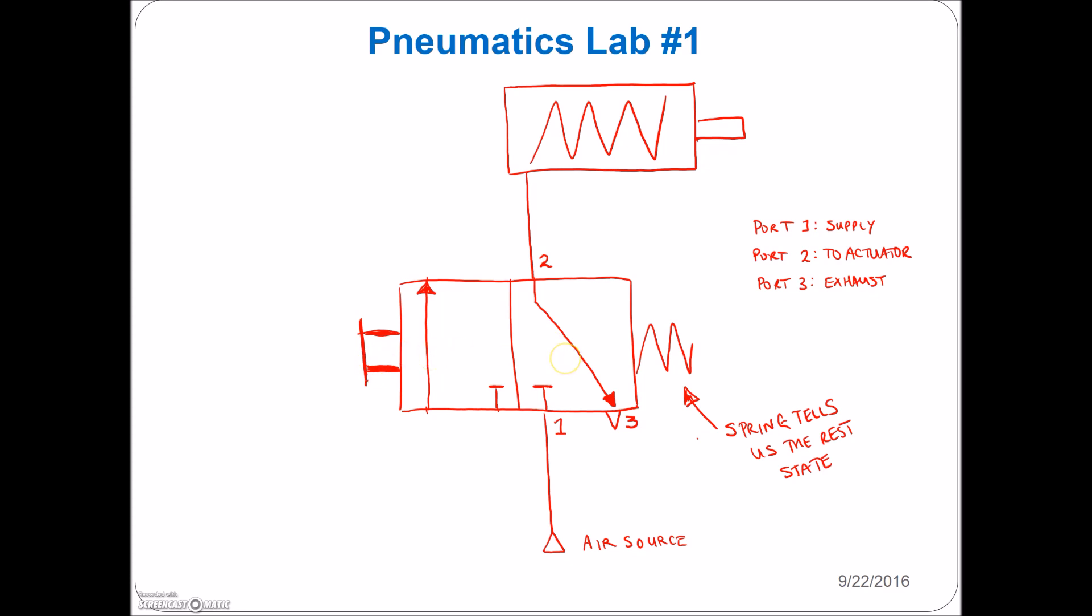Okay, this switch that we're using is called a 3-2, manually operated, push button actuated valve. What does the 3 and the 2 denote? The 3 denotes the number of ports. The 2 denotes the number of positions of the switch.